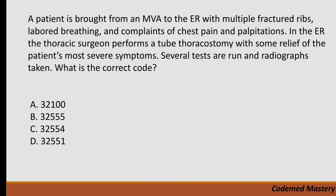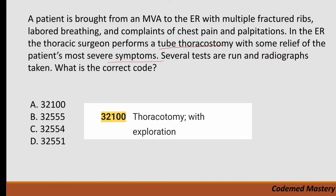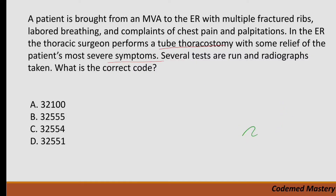A patient is brought from an MVA to the ER with multiple fractured ribs, labored breathing, and complaints of chest pain and palpitations. In the emergency room, the thoracic surgeon performs a tube thoracostomy with some relief of the patient's most severe symptoms. What is the correct code? Option A, 32100, is for thoracotomy with exploration, but in our case they performed tube thoracostomy, not thoracotomy with exploration, so we eliminate option A.